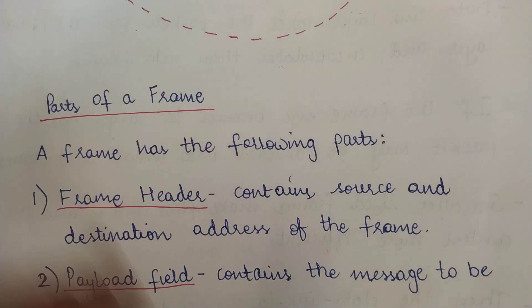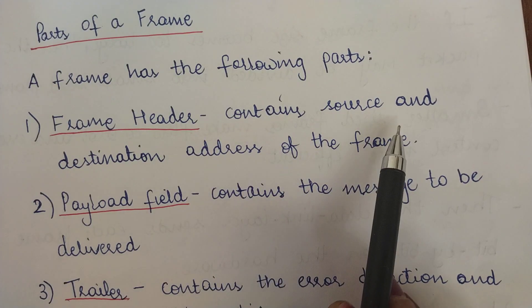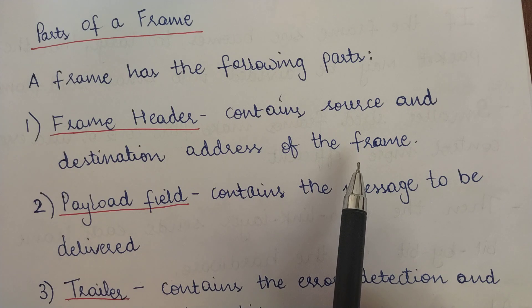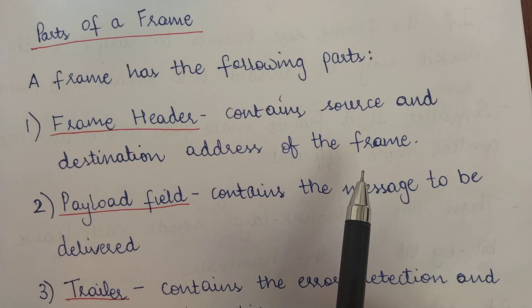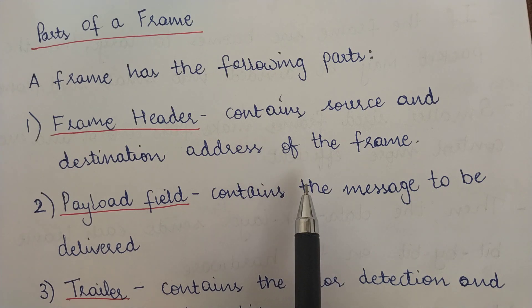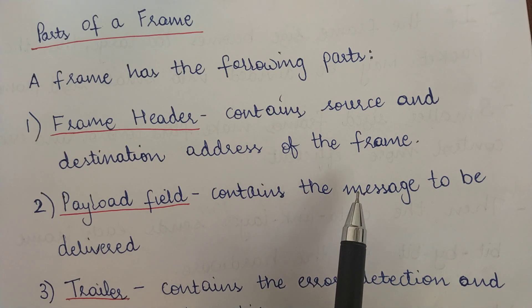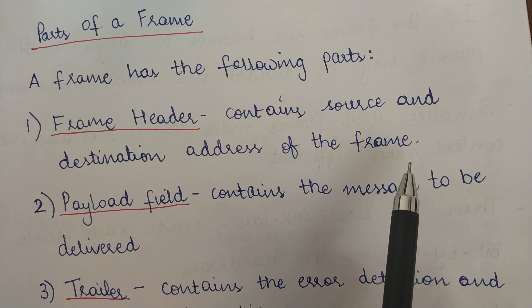Now let's discuss the parts of a frame in detail. The frame header contains the source and destination address of the frame. Since frames are transmitted individually and no frame is bound to choose the same path as a previous frame, each frame can choose its own independent path. For this reason, each frame carries source and destination addresses, so it is known where the frame is coming from and where it is destined, ensuring only the correct machine receives and processes it while others ignore it.